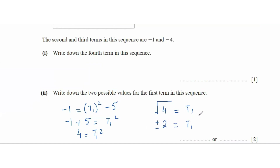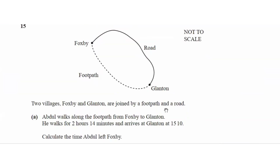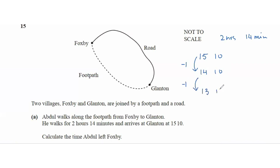Question 15: two villages Foxby and Glanton are joined by a footpath and a road. Abdul walks for 2 hours 14 minutes and arrives at Glanton at 15:10. Working backwards: subtract 1 hour → 14:10, subtract another hour → 13:10, subtract 10 minutes → 13:00, subtract 4 minutes → 12:56. So Abdul left Foxby at 12:56.